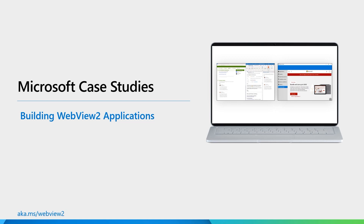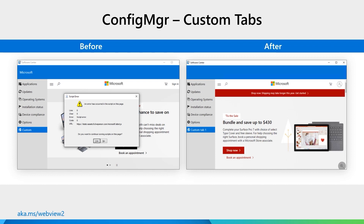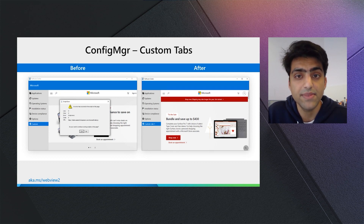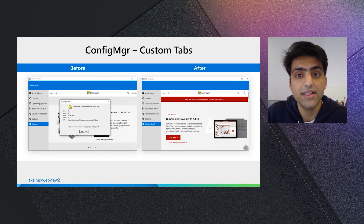The first case study I want to highlight is the Config Manager custom tabs experience. Config Manager is an application IT administrators can use to manage other applications within their organization. Config Manager has a custom tabs experience in the Software Center. This allows IT administrators to pin some of their top websites within the Software Center. As you can see on the left, the IT administrator has pinned Microsoft.com in their Software Center. Previously, the Config Manager loaded this website via the Internet Explorer-based browser control. This created problems, because Microsoft.com is a modern website, and when loaded on a legacy web browser control, it led to security errors and script errors, as you can see on the left.